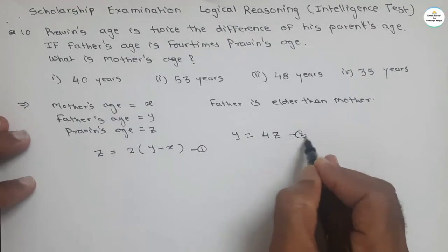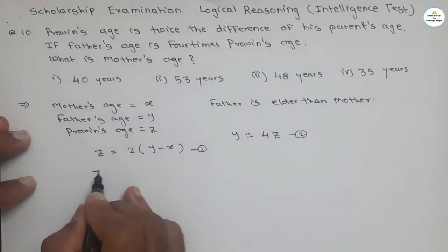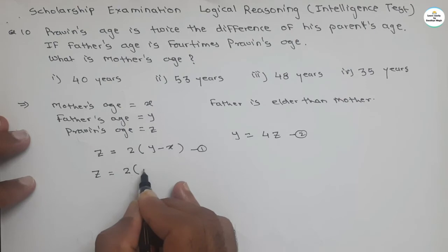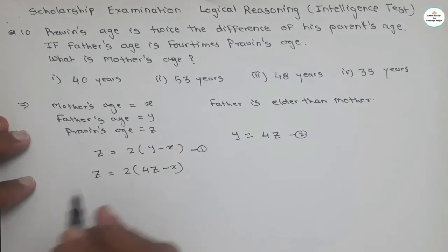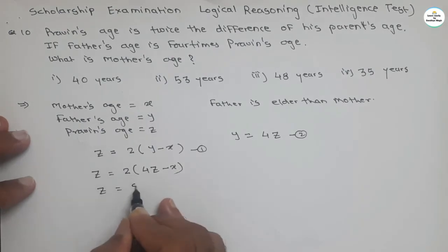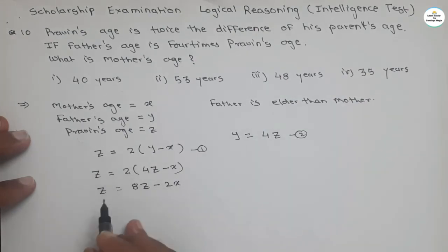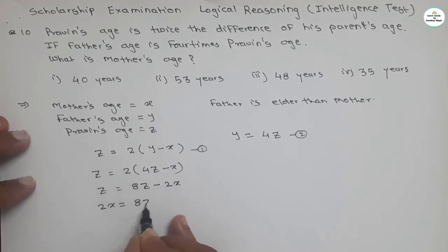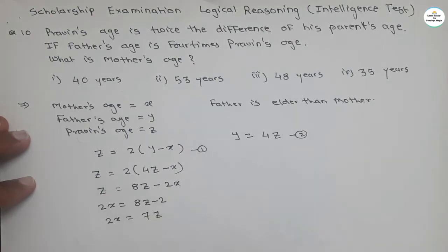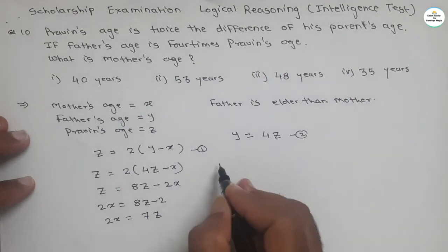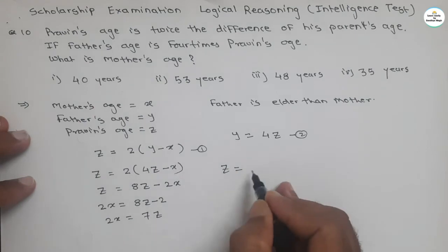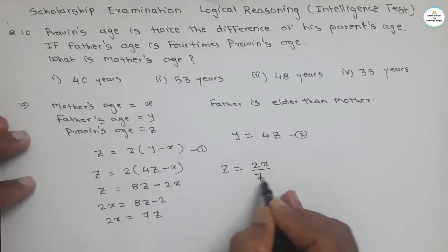Substituting Y equals 4Z into the first equation: Z equals 2 times (4Z minus X), giving Z equals 8Z minus 2X. Transferring terms: 2X equals 8Z minus Z, so 2X equals 7Z. Therefore Z equals 2X divided by 7.